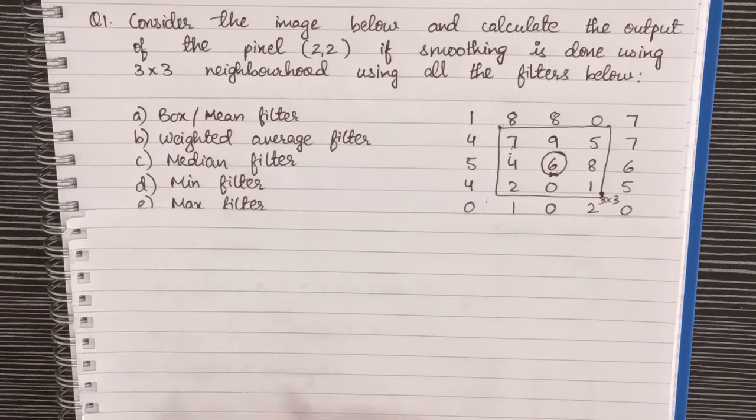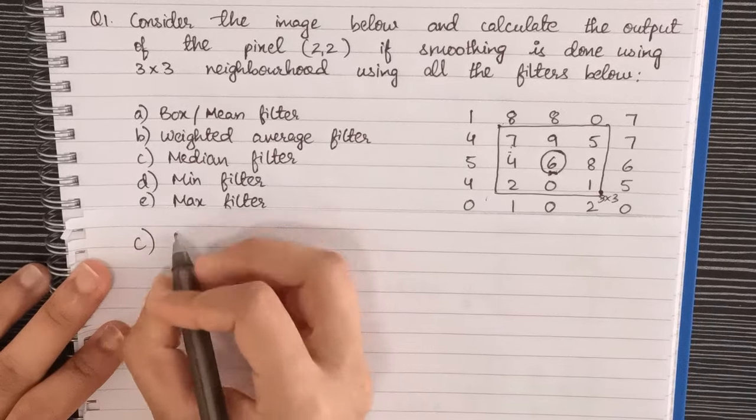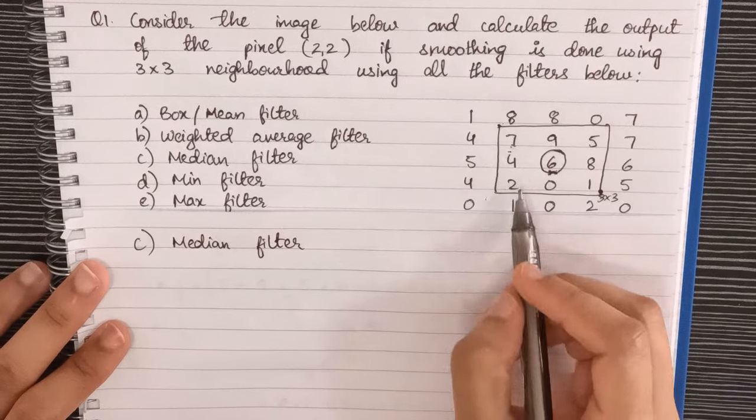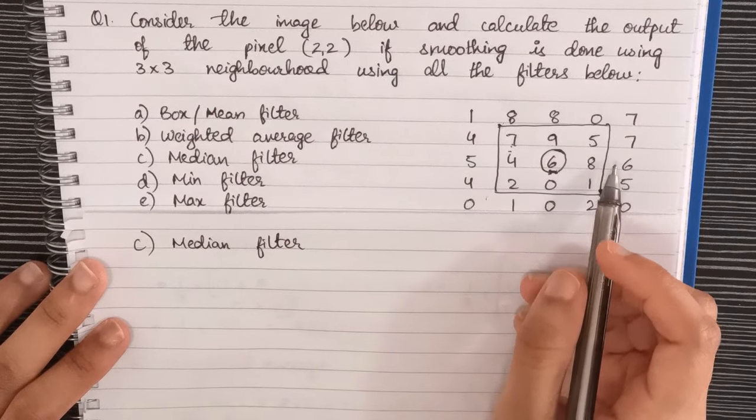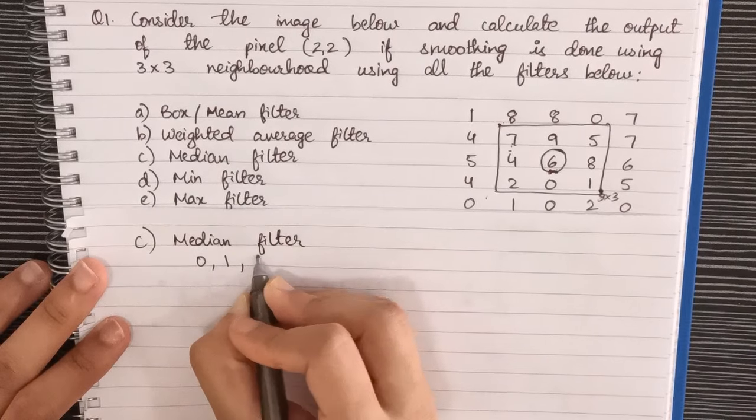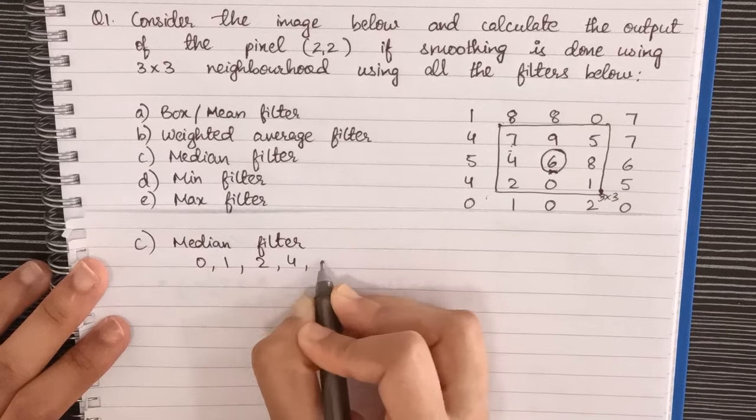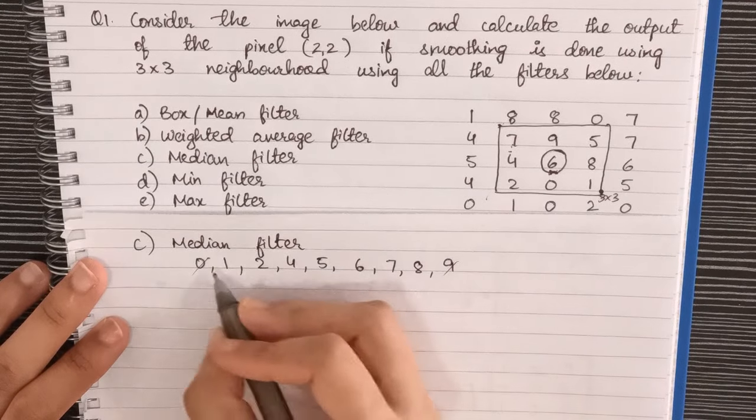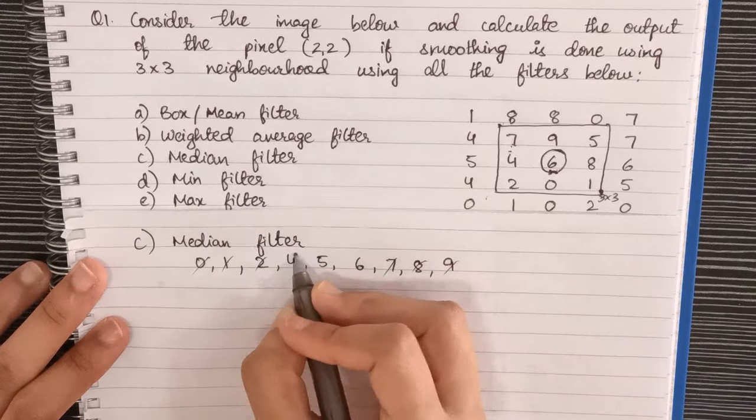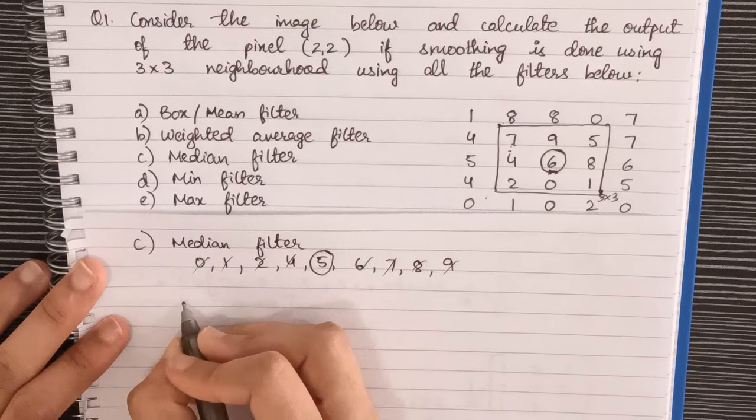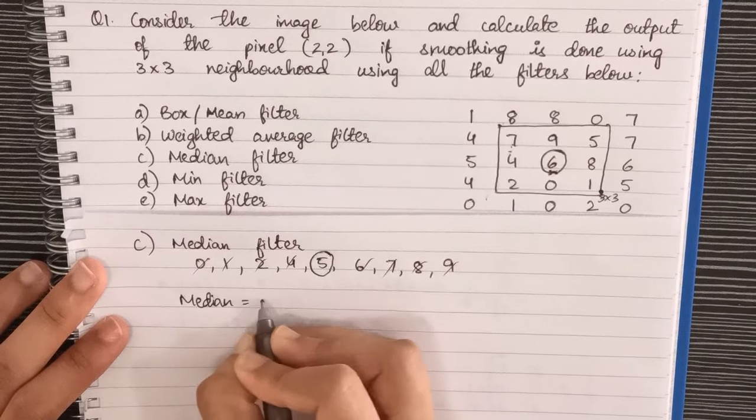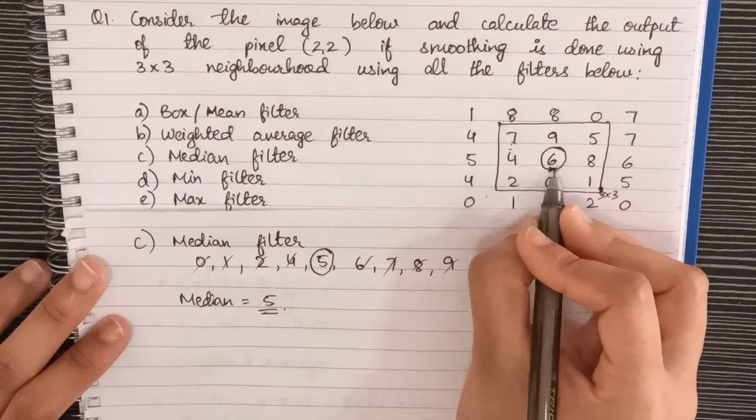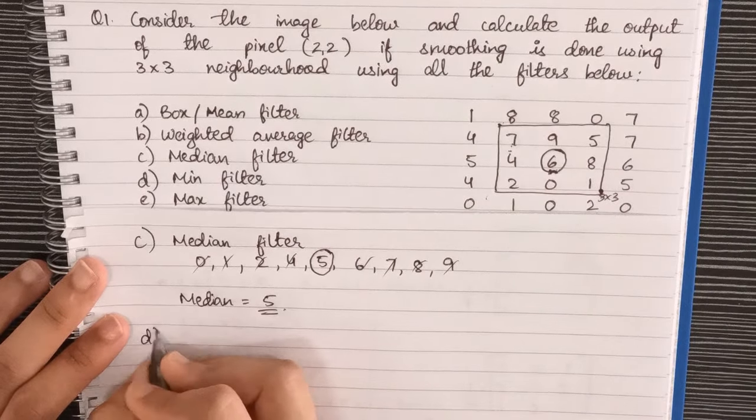Next we'll calculate median filter. We will arrange all of these elements in ascending order. If we write it in ascending order it will be 0 1 2 4 5 6 7 8 and 9. Now if you calculate the center element, the center element is 5, so therefore the median here is 5. So 5 will be our answer, 5 will be replaced by the 6 here.